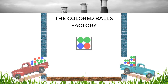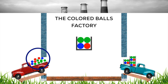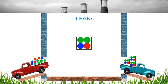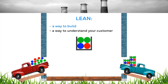This is a colored balls factory. Its input is three types of colored balls — red, blue, and green — which it gets from its suppliers, and its outputs are these balls put together in a certain way and packaged. The factory's business is acquiring these colored balls, turning them into the finished product, and getting it to its clients. Lean is a way of organizing a business, building and delivering products or services, and understanding who your client is and what they want.